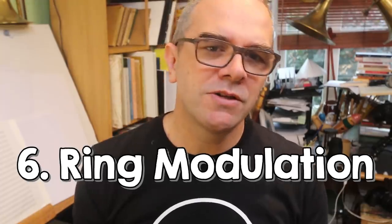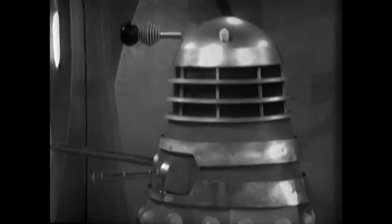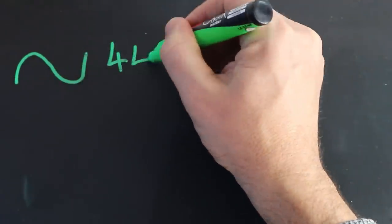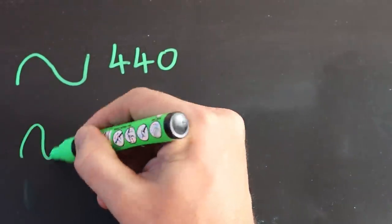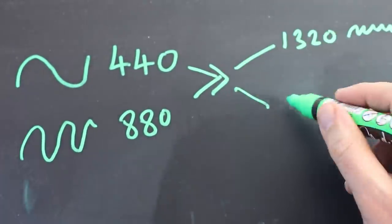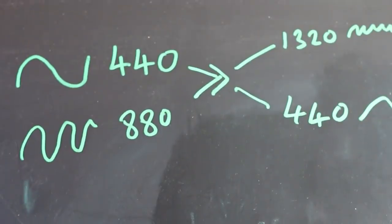Ring modulation is probably best known from the sound of the Daleks in Doctor Who. Ring modulation takes two signals and creates two new signals from them that are the sum and the difference of those two original signals. With a sine wave at 440 Hz and another note an octave higher at 880 Hz, the result will be two new waves: one at 1320 Hz and one at 440 Hz. If you start dealing with more complicated sounds — the sounds of real instruments — things can get very complicated very quickly.